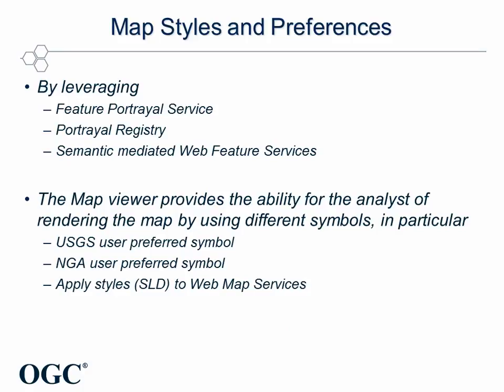The analyst will have the ability to render features using different symbologies. In particular, the application leverages the feature portrayal service, the portrayal registry, and the semantic mediated web feature service to provide maps using USGS user-preferred or NGA user-preferred symbols for all available features, regardless of whether these are NGA or USGS data sets, and also to apply styles — SLDs — to web map services.